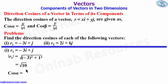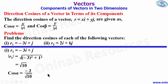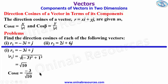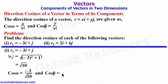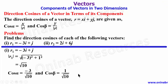We now go ahead to find the direction cosines. So cos α, where x = -3, gives us -3 / |r1| = -3 / √10. And cos β, where y = 1, gives us 1 / √10. You have the option of rationalizing or leaving it as is. That's all for the direction cosines of r1.